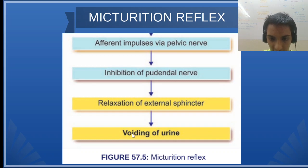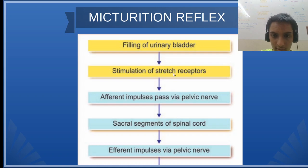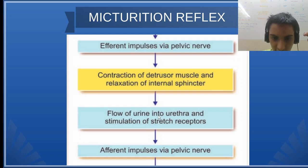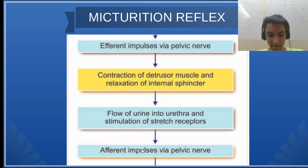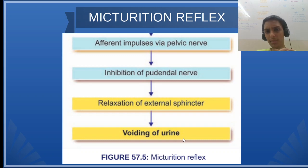And then there is micturition — the release of urine. To repeat the process stepwise: filling of urinary bladder → stimulation of stretch receptors → afferent impulses via pelvic nerve → activation of sacral segments → efferent impulses via pelvic nerve → contraction of detrusor muscle and relaxation of internal sphincter → urine flows into urethra activating stretch receptors → afferent impulses via pelvic nerve → inhibition of pudendal nerve → relaxation of external sphincter → micturition.